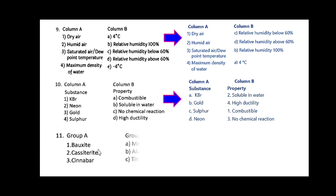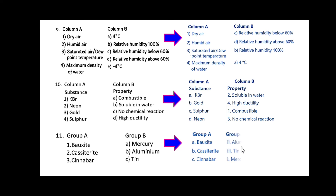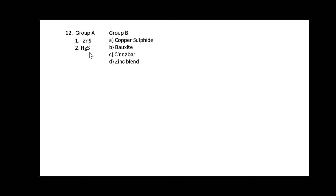Next, in group A some substances like bauxite, cassiterite, and cinnabar are given. The match is: bauxite is aluminium ore, cassiterite is tin, and cinnabar is mercury. For question 12, ZnS and HgS are given. ZnS is zinc blende and HgS is cinnabar.